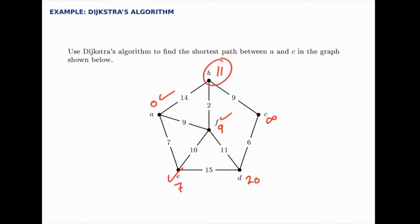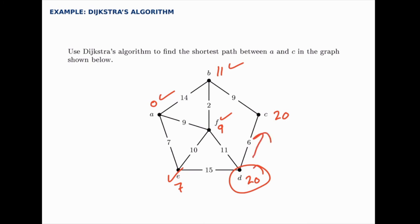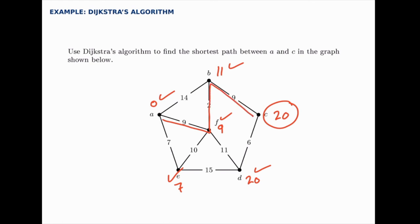Now we check b. We don't have to worry about going back to a or to f since we've already checked those, so all we check is the path forward: current distance of 11 plus 9 gives us 20. Then checking d — it's already at 20, so adding 6 here gives 26, which is no better than the 20 we already have. So the optimal shortest distance from a to c is 20, going through f and b down to c. The shortest path is a to f to b to c with a length of 20.